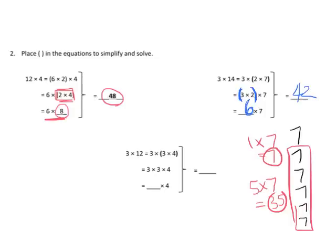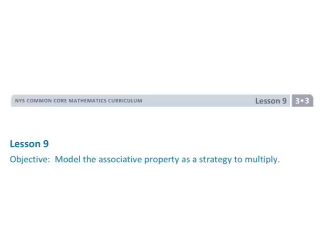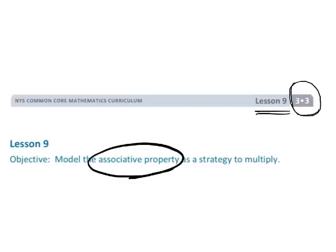The last one: 12 is the big number, so we factor it to 3 times 4. Then we use the associative property and fill in the parentheses. We can do 3 times 3 is 9, and 9 times 4 is 36. And that is Grade 3, Module 3, Lesson 9, where we are using the associative property to solve some larger multiplication problems.